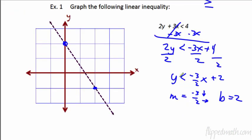Now it's y is less than, so we have to know which way to shade. There are two ways to figure out how to shade. First way: if you have it in slope-intercept form and y is first, y is less than means underneath. Less than — these numbers are less than. Here's the line — we need the numbers that are less than, so we're going to shade on this side of the line.